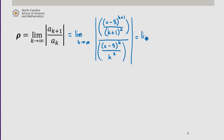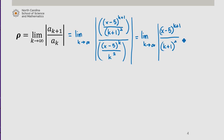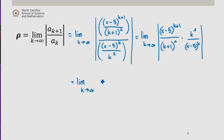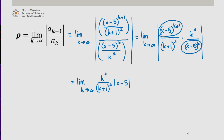Using algebra, we can rewrite this as the limit as k approaches infinity of the absolute value of (x minus 5) to the k plus 1 divided by (x minus 5) to the k, times k squared divided by (k plus 1) squared. So we have a factor of (x minus 5) left in the numerator after we perform this division.